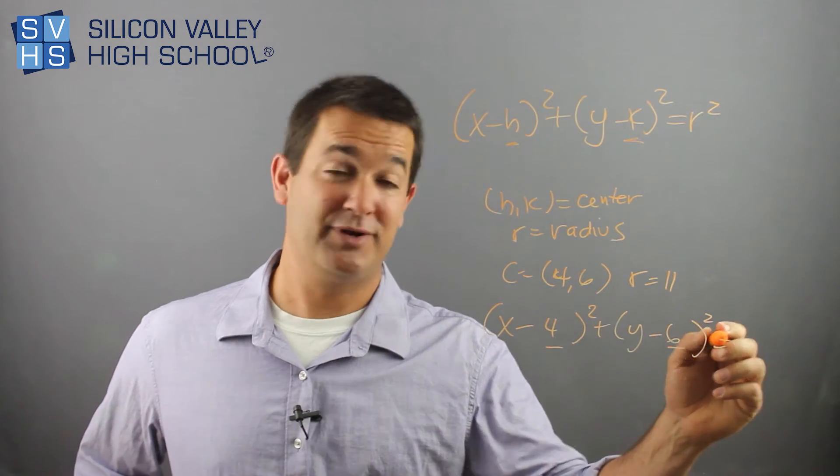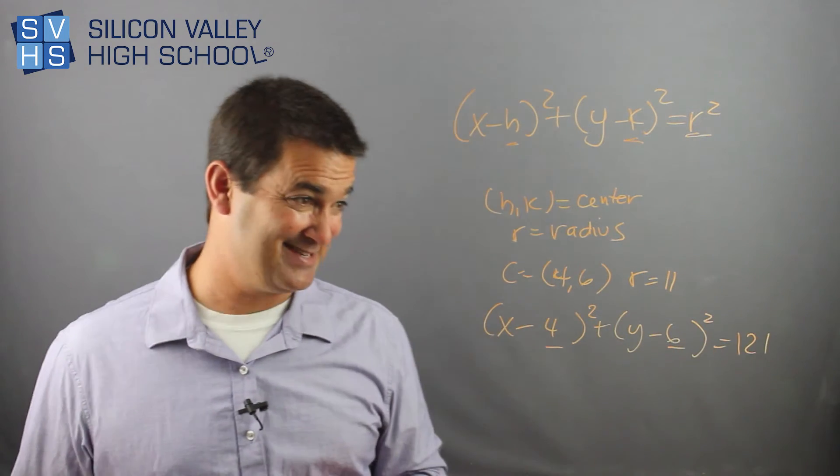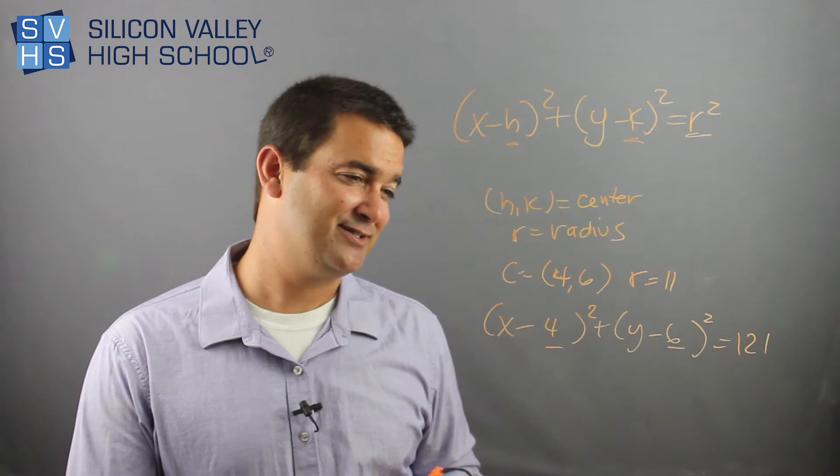And then at the end, I don't put 11, right? Because I want r squared. So what is 11 squared? 121. And that is a miracle. And that's all you do for the equation of a circle.